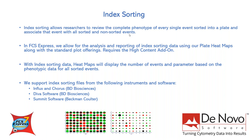In order to work with index sorting data in FCS Express, you will need to purchase the high content add-on. With index sorting data, heat maps will display the number of events and parameters of the phenotypic data for all sorted events. Wells may be gated on individually or as groups using well gates, which are then back gated onto other plots to view the individually sorted cells in the context of the entire acquired or sorted samples.